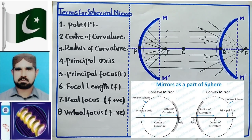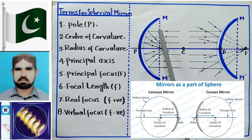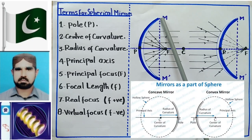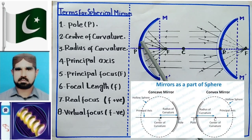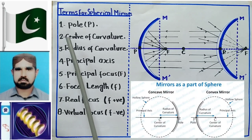आपको diagram बनी नजर आ रही है। सबसे पहली definition जो हम करने जा रहे हैं वो है pole की। दोनों spherical mirrors हैं — यह concave mirror है जिसमें अंदर वाली सतह reflecting है, यह convex mirror है जिसमें बाहर वाली सतह reflecting है। Mirror को MM' से जाहर किया गया है। दोनों diagram में एक point P लिखा हुआ नजर आ रहा है जो curved surface का mid point है। Mid point of the spherical mirror is called pole और इसको P से जाहर किया जाता है।